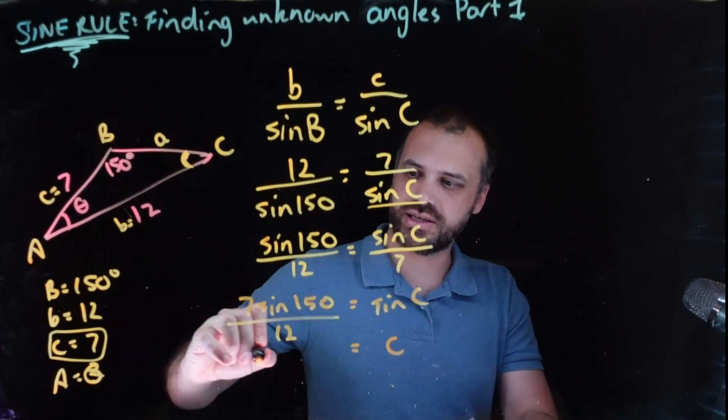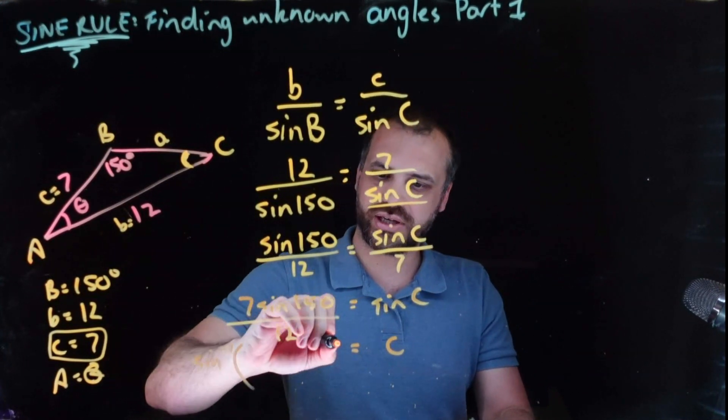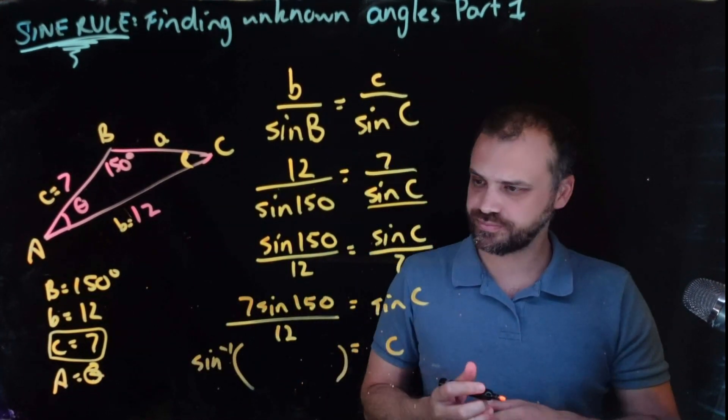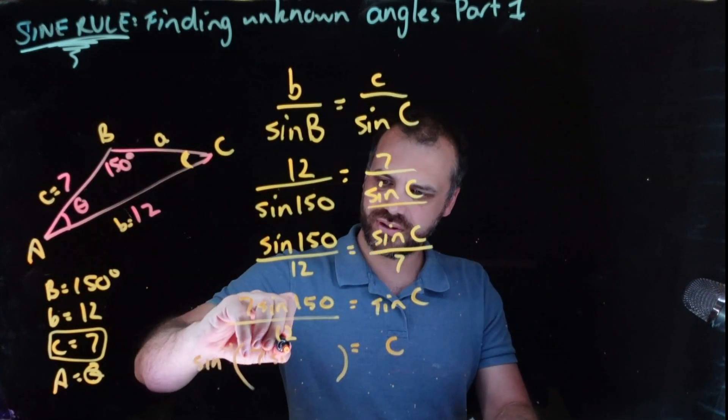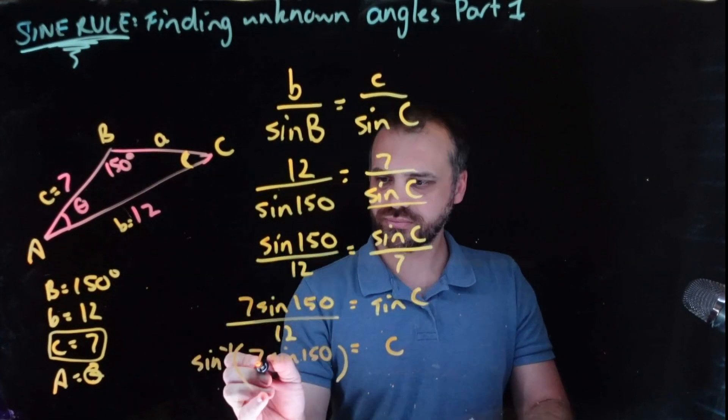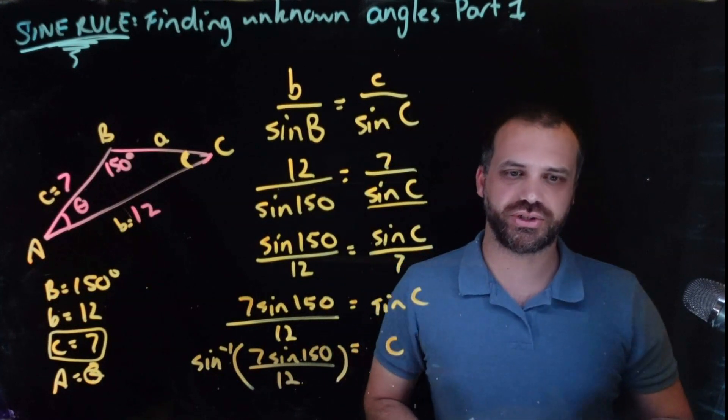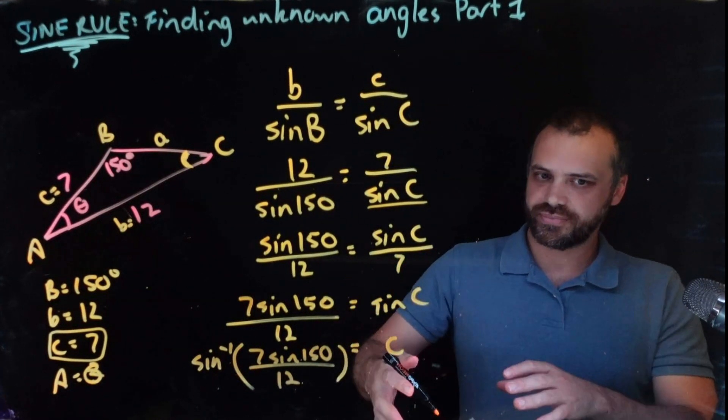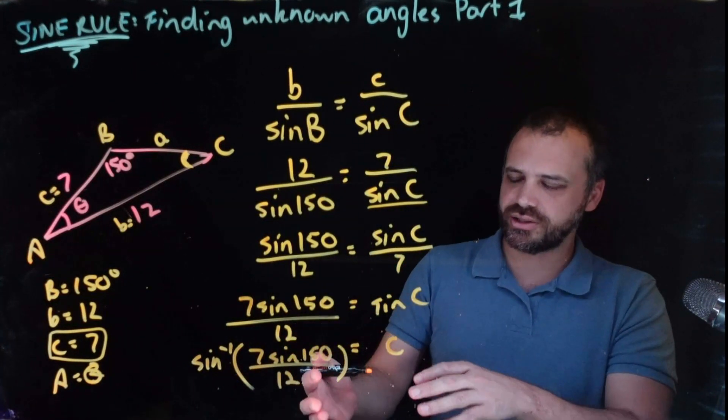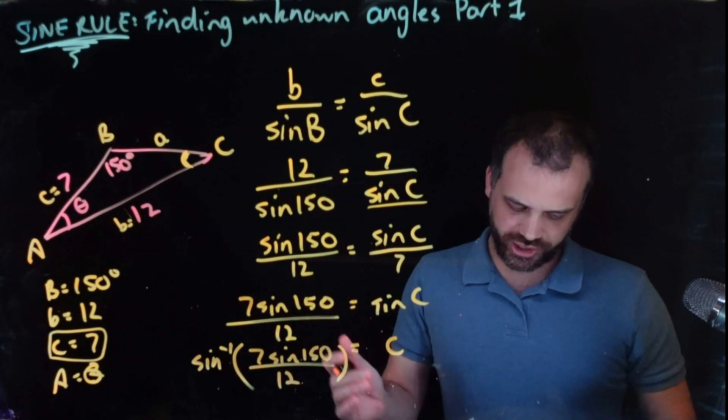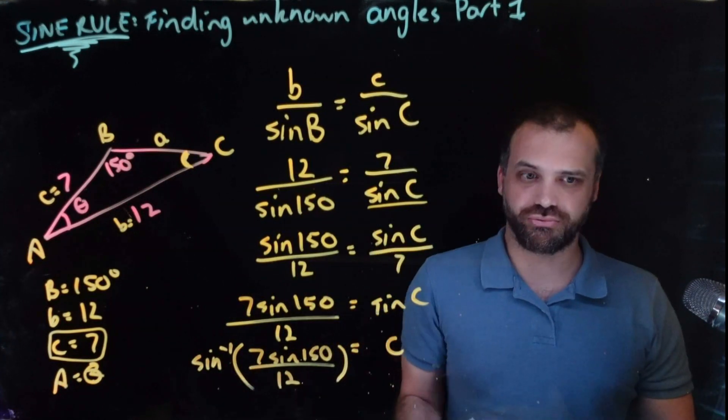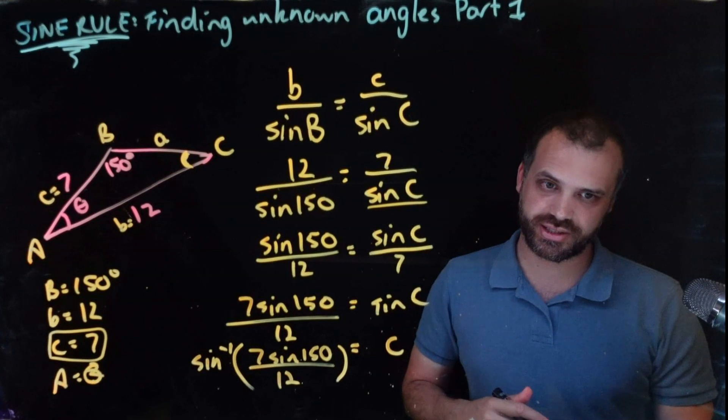So C is equal to inverse sine. On your calculator, that's like shift sine. And then seven sine 150 divided by 12. Okay, you can see it's kind of a bit ugly because like a sine nested within a sine. But you can type that directly into your calculator and you'll get an answer.